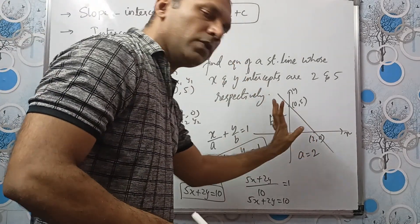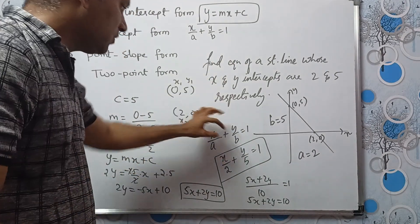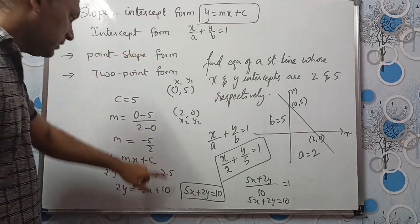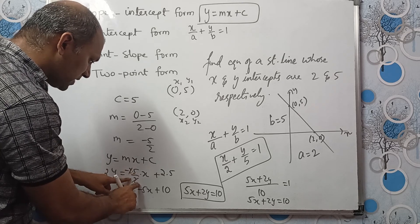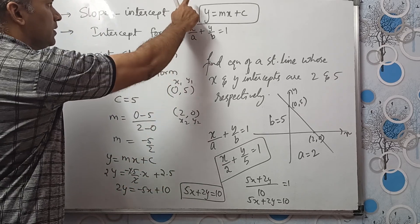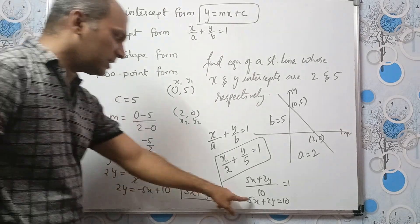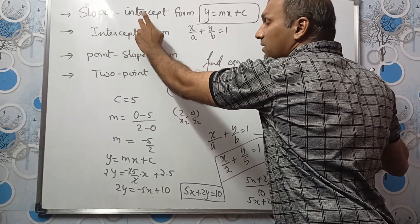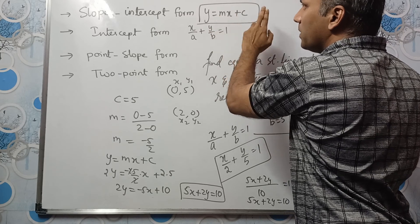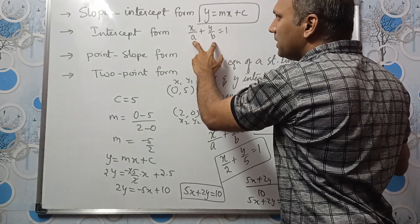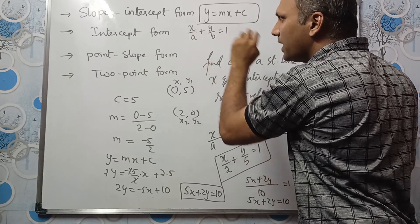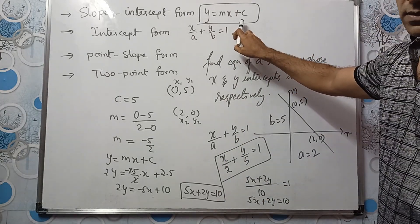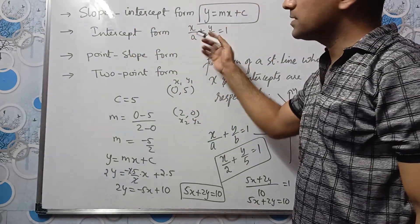The equation of the straight line doesn't change — we just write it in different forms. x/2 + y/5 = 1 is intercept form; y = (-5/2)x + 5 is slope-intercept form. When slope and y-intercept are given, use y = mx + c. When x-intercept a and y-intercept b are given, use x/a + y/b = 1, with 1 always on the right-hand side.